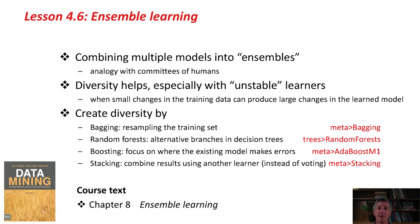In summary, we've been talking about combining multiple models into ensembles — the analogy is with committees of humans. Diversity helps, especially when learners are unstable. In bagging, we create diversity by resampling the training set. In random forests, by choosing alternative branches in decision trees. In boosting, by focusing on where existing models make errors. In stacking, we combine results from different learners using another learner instead of voting. There's a chapter in the course text on ensemble learning. There's also an activity to complete before the next and final class, where we'll learn about putting it all together and taking a global view of the machine learning process.